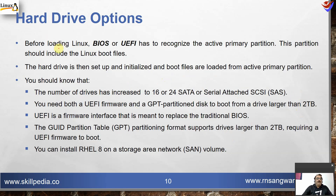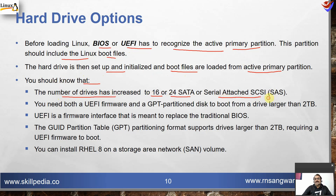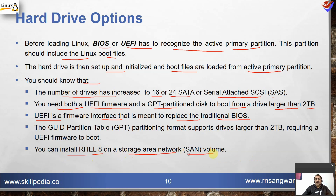Hard drive options: before loading Linux, BIOS or UEFI has to recognize the active primary partition, which should include the Linux boot files. The number of drives has increased to 16 or 24 SATA or SGL attached to SCSI or SAS devices. You need both UEFI firmware and a GPT-based partition disk to boot from drives larger than 2 terabytes. UEFI is meant to replace the traditional BIOS. You can also install CentOS 8 on a storage area network or SAN volume.